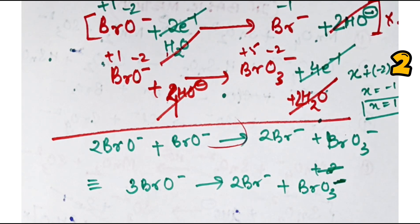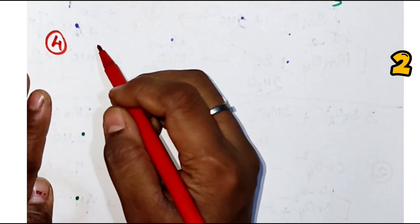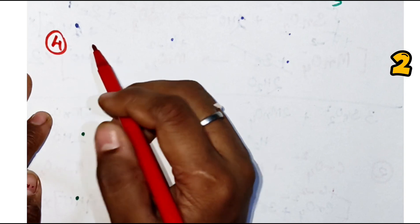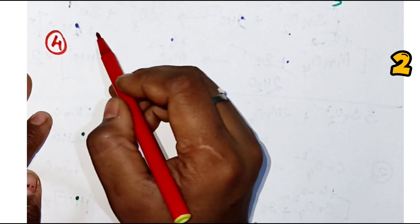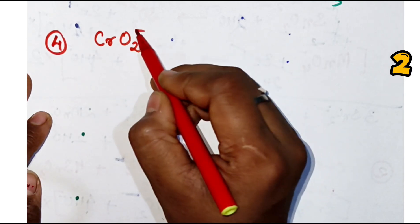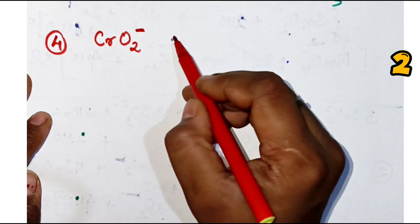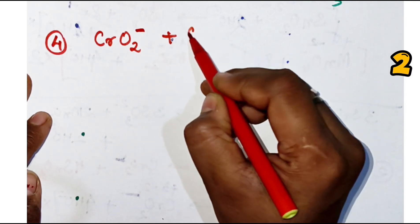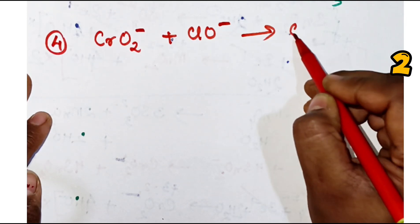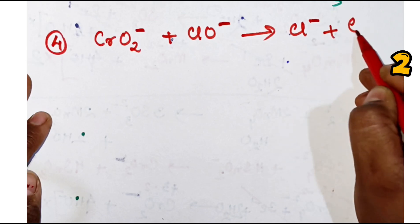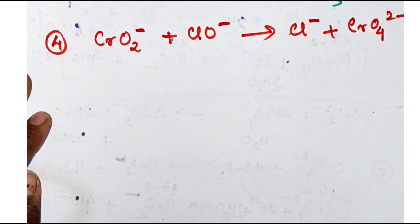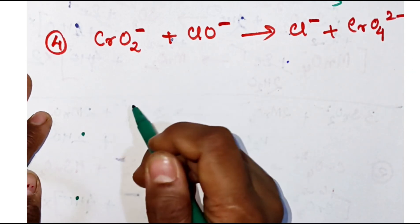We have done equation three, and now we are going to do the last equation. I hope you can now understand how to balance redox reactions using the oxidation number method in basic medium. If there are any questions or queries, you can pin them in the comments so I can do the next video on that topic.